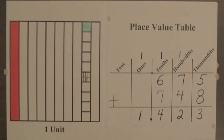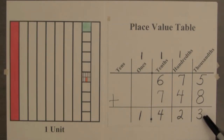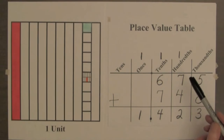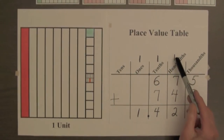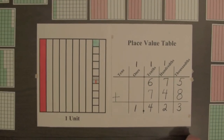You can see why we usually begin by adding the digits in the thousandths column — because if there are ten or more, we can replace ten-thousandths by one-hundredth, and regroup to the hundredths column.